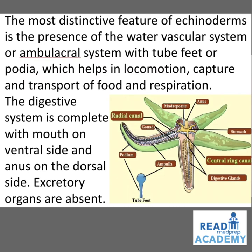The digestive system is complete with mouth on the ventral side and anus on the dorsal side. The excretory organs are absent. In the image on the right side, you can see the digestive glands, the central ring canal, the stomach, anus, madreporite, radial canal, gonads, and the podium and ampulla joined together to form the tube feet.